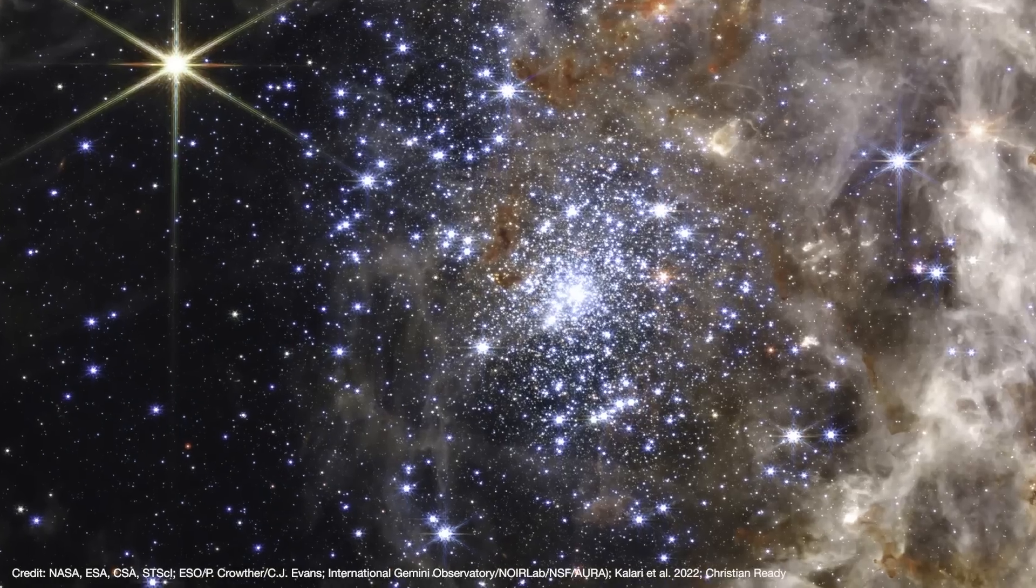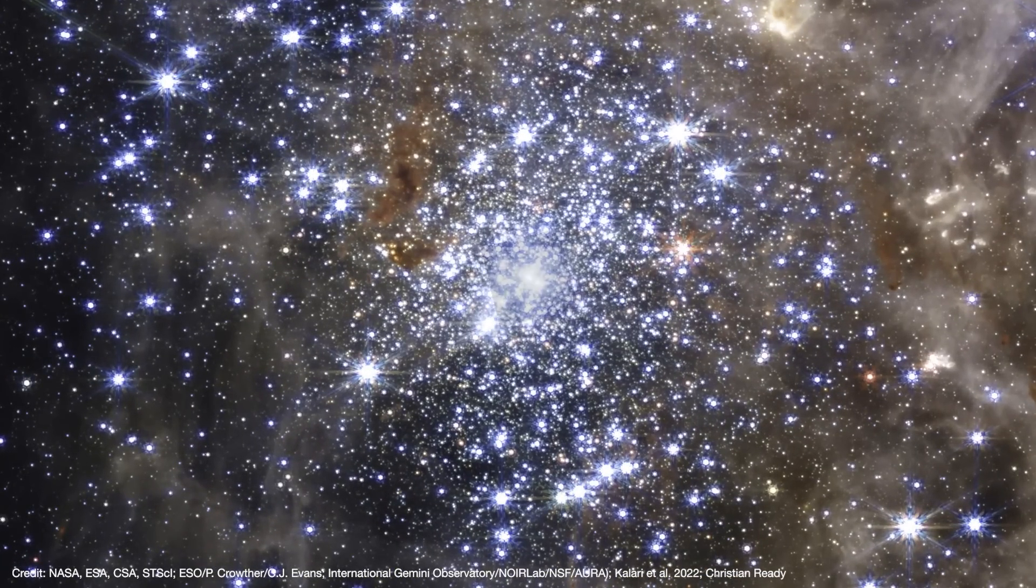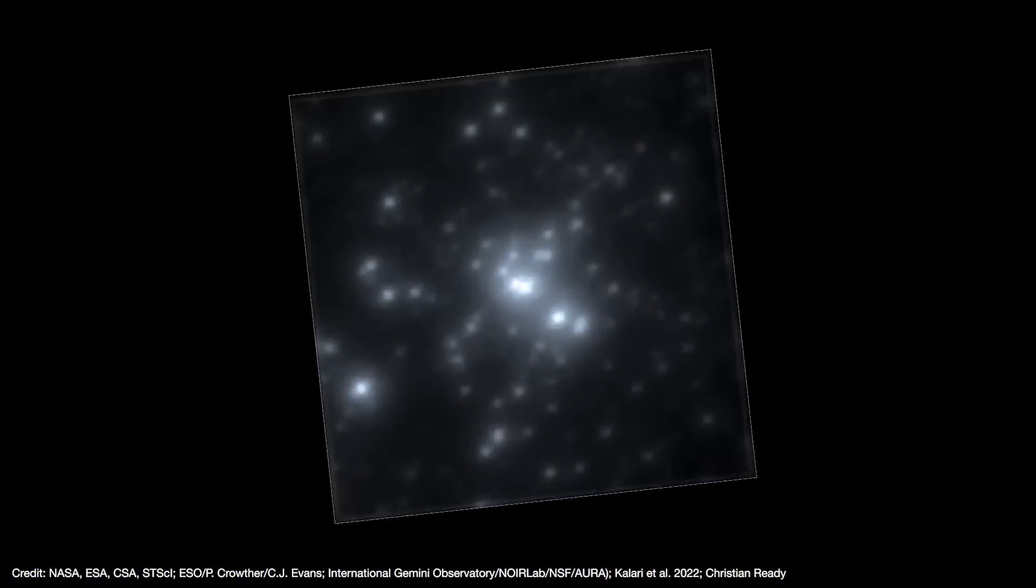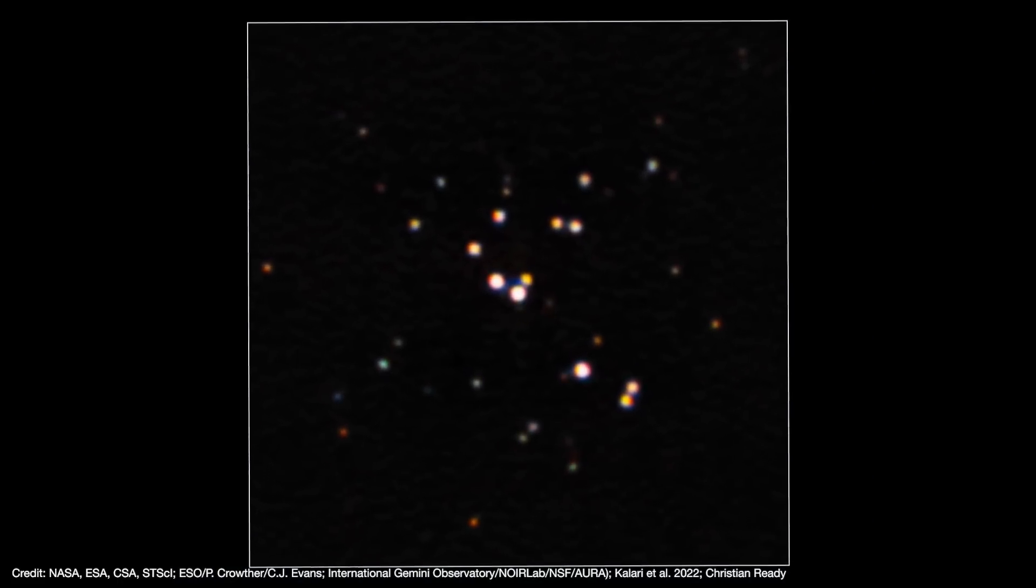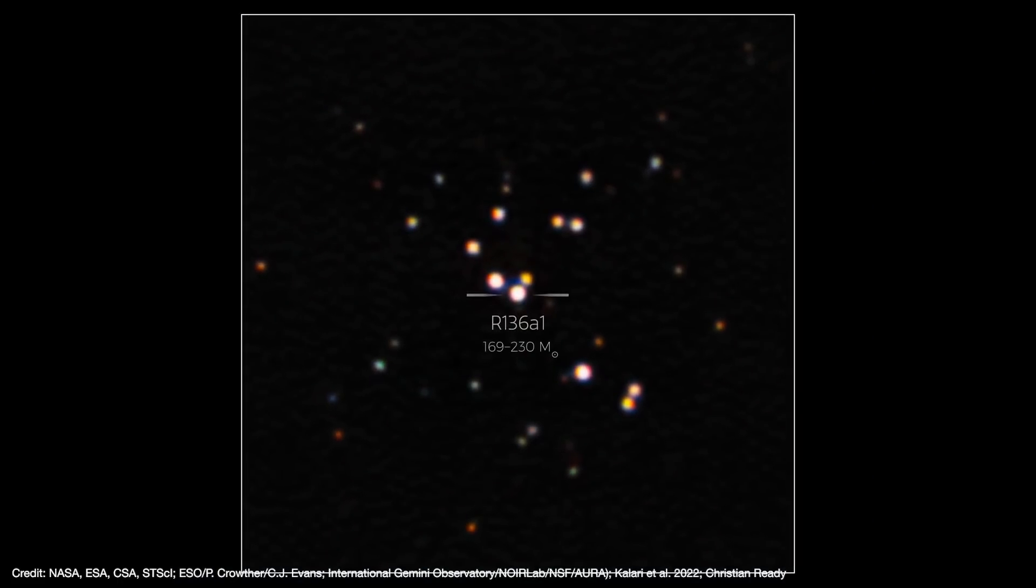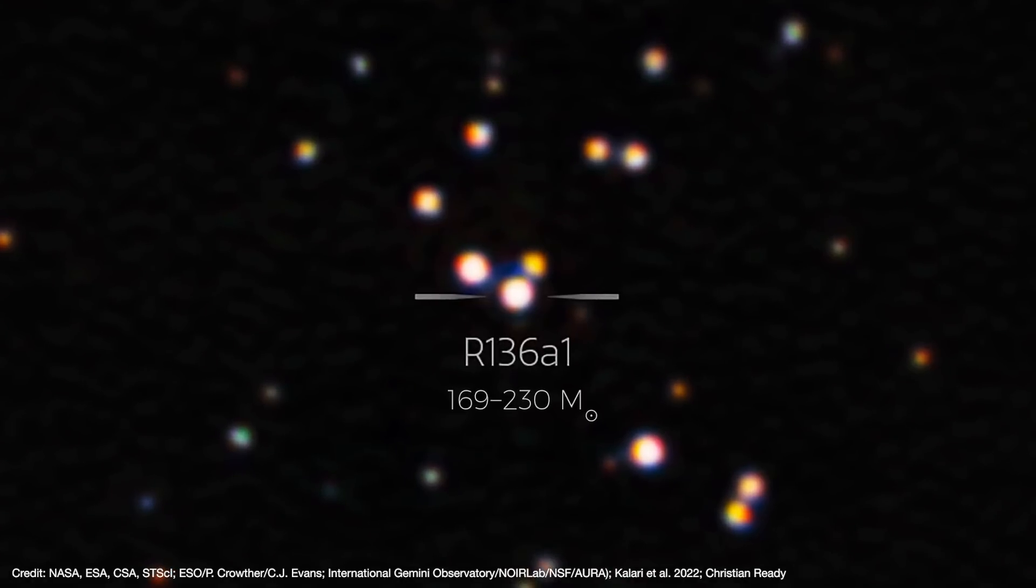The stars of the R136 cluster are truly staggeringly massive. In fact, recent work showed that its largest star, R136A1, has a mass anywhere from 169 to perhaps as much as 230 solar masses. Even at that lower range, this makes R136A1 the most massive star that we know of.